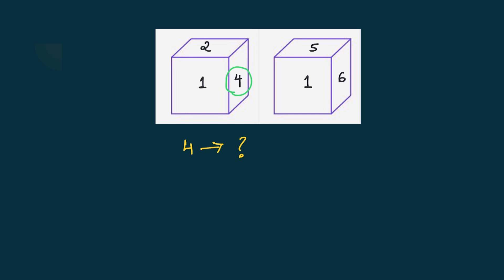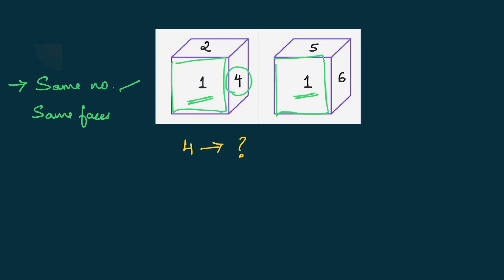In step one, check whether the same number is present on the same face of both dice. Here, one is present on the front face of the first dice as well as the second dice — same number, same face. If this condition is satisfied, then the remaining two faces will be opposite to each other.